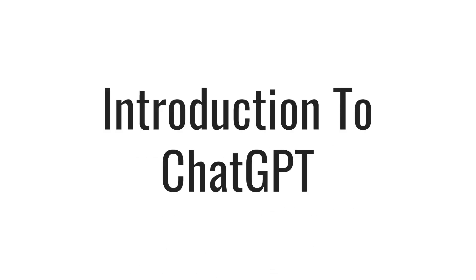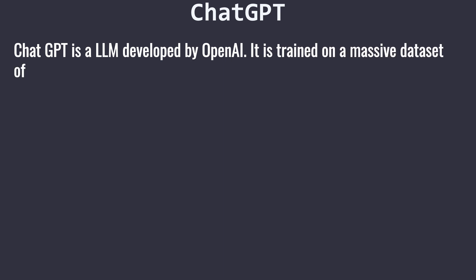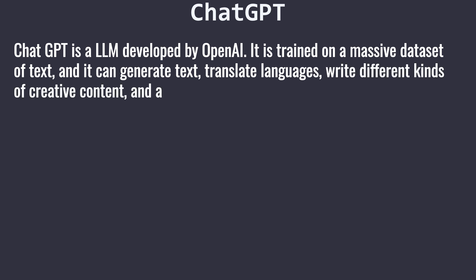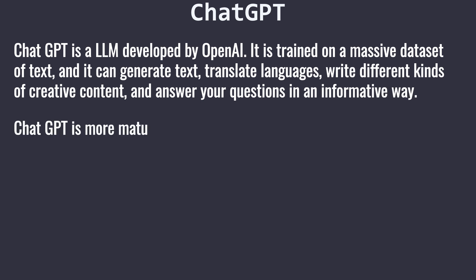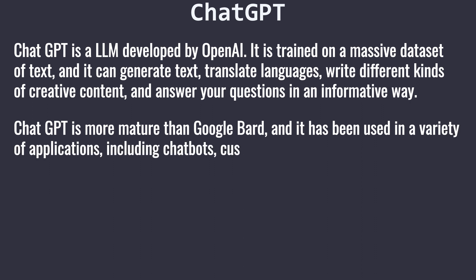Introduction to ChatGPT. ChatGPT is a large language model developed by OpenAI. It is trained on a massive dataset of text, and it can generate text, translate languages, write different kinds of creative content, and answer your questions in an informative way. ChatGPT is more mature than Google Bard, and it has been used in a variety of applications, including chatbots, customer service, and education.